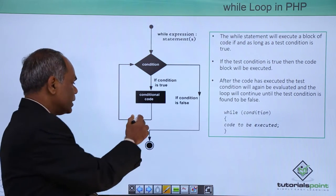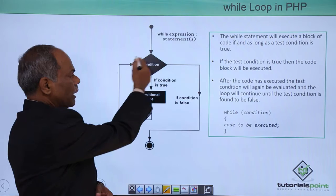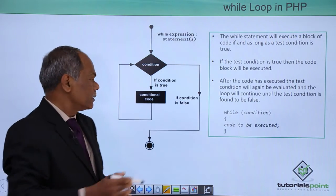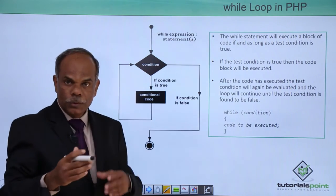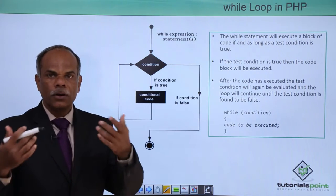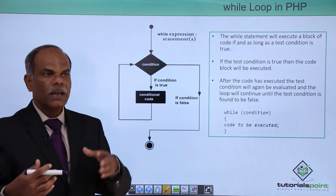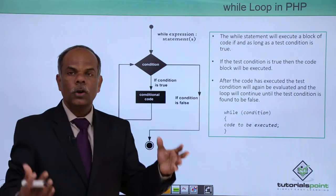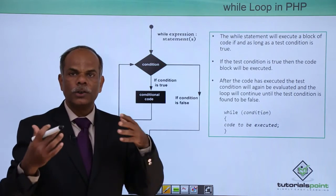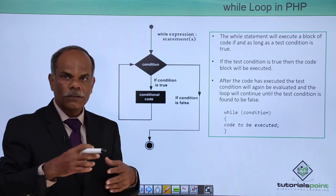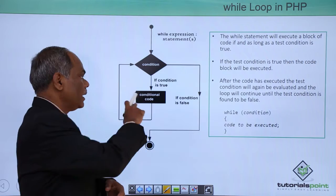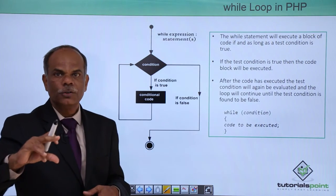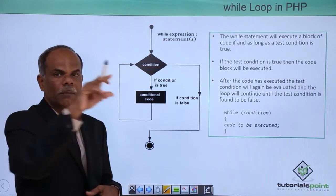If the condition holds true, then the control goes back to the condition again and the block of code to be conditionally executed will keep on executing. As soon as the condition is no longer found to be true, the control of the program, instead of entering into the block of statements to be executed, will come outside.